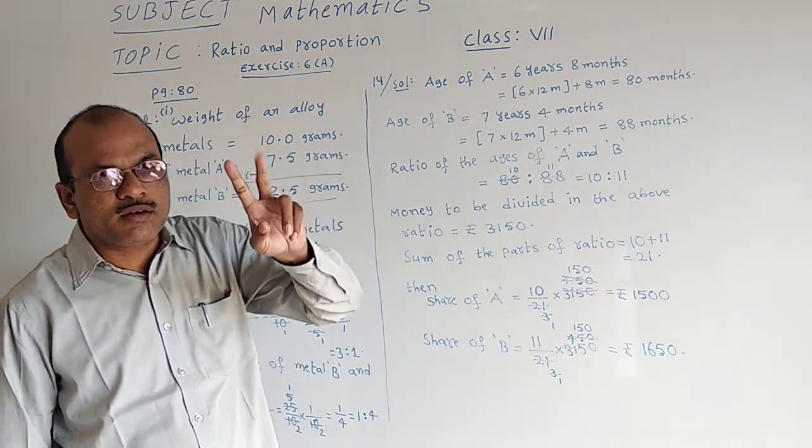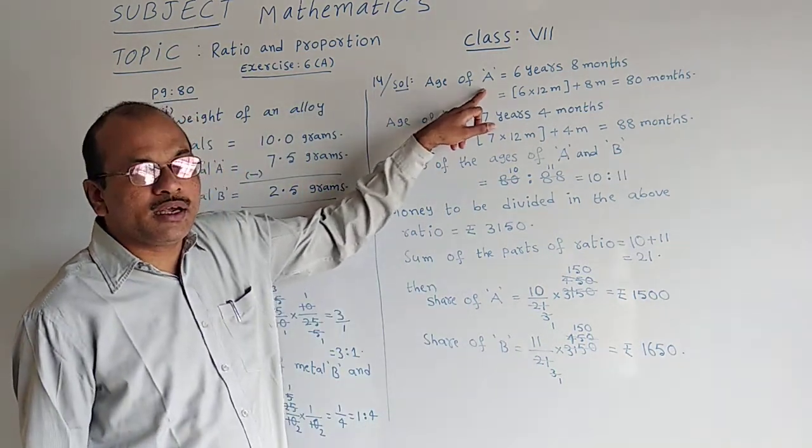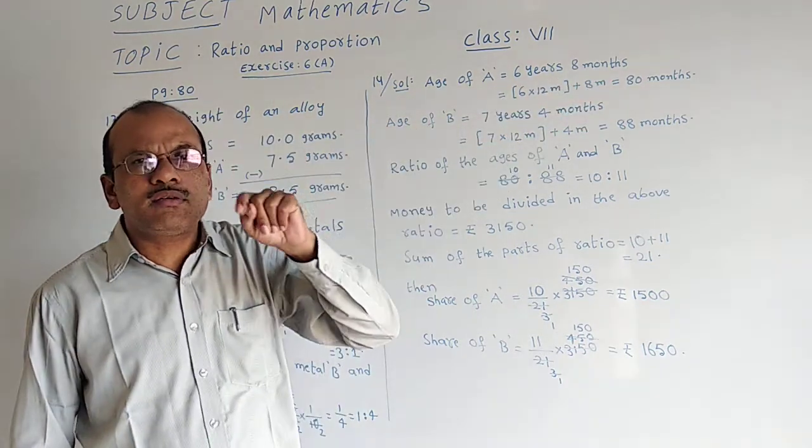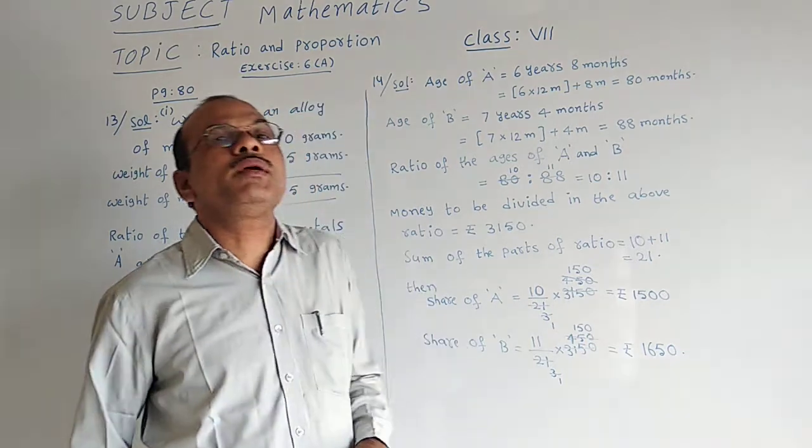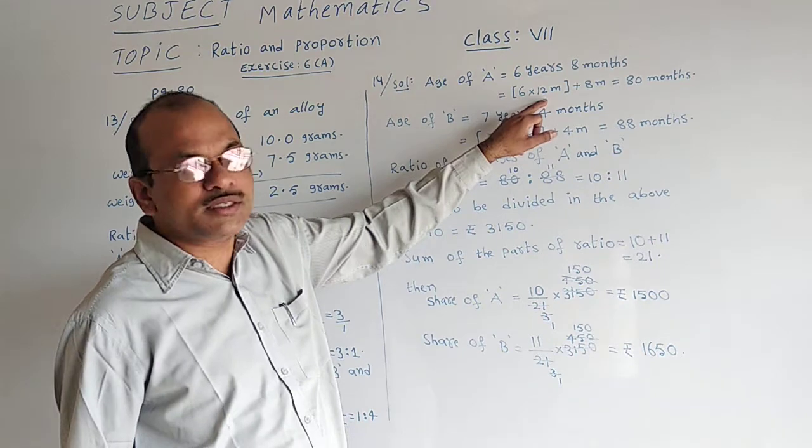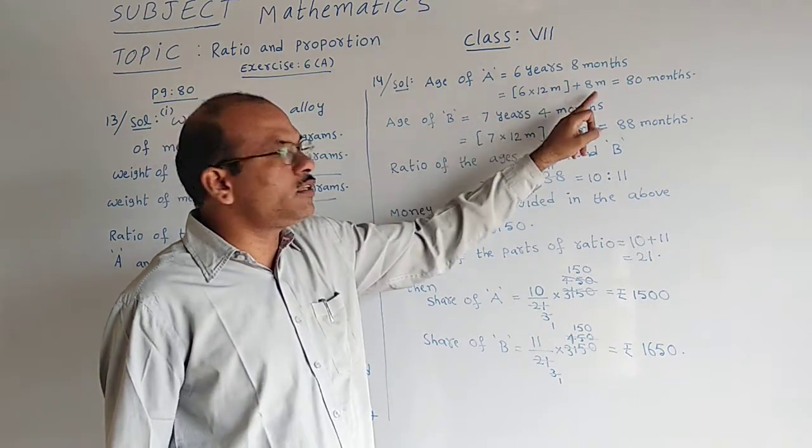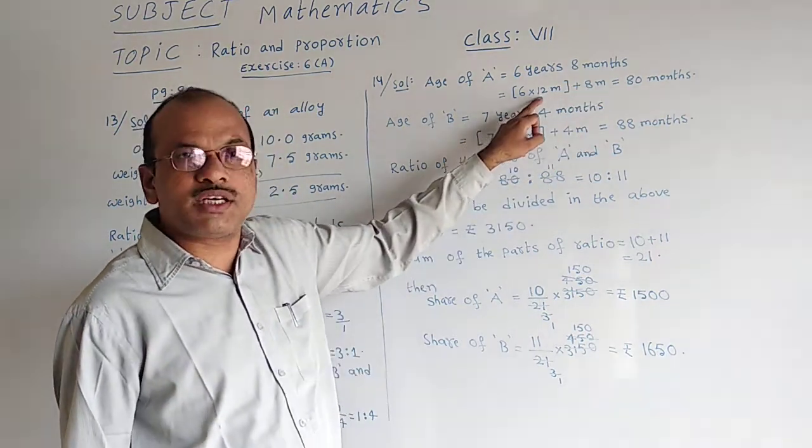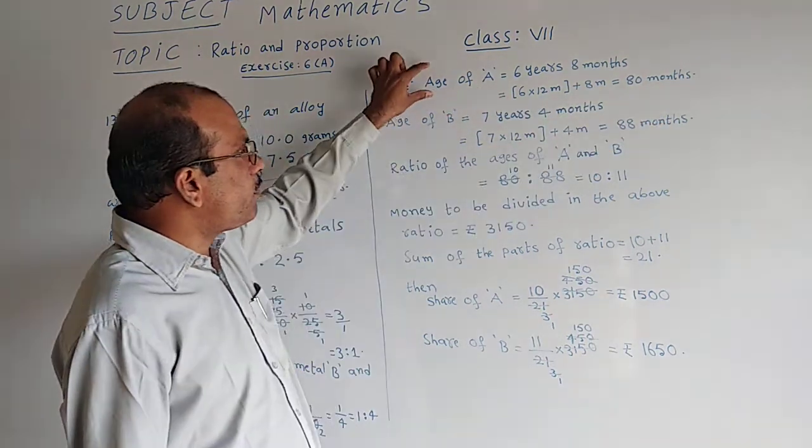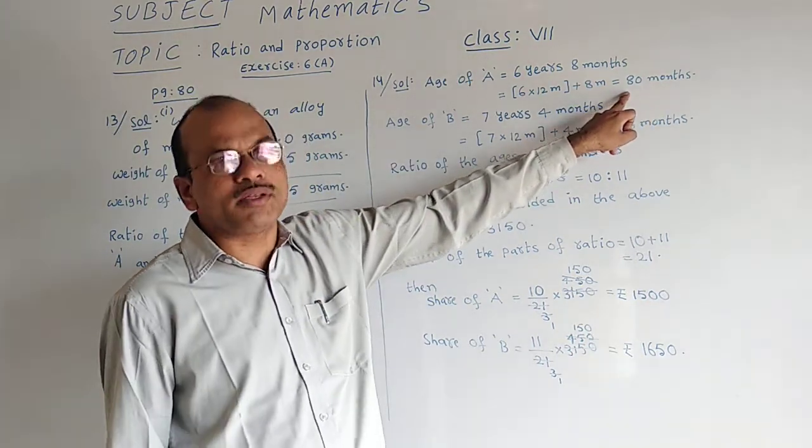Let us see question number 14. Here two people are given: Person A and person B. Age of person A is given as 6 years and 8 months. In 1 year there are 12 months. So 6 years means 6 into 12 months to find the number of months for 6 years, plus that 8 months. 6 times 12 are 72, 72 plus 8 is 80 months. So age of person A changed to months is 80 months.